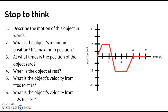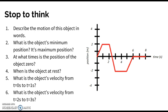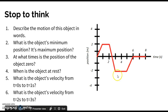The position is zero whenever the line crosses the x-axis — at time zero, again at two and a half seconds, and between six and eight seconds. When the object is at rest, it has a velocity of zero, so the slope is flat. That occurs from t=1 to t=2 seconds, from t=3 to t=5 seconds, and again from t=6 to t=8 seconds.